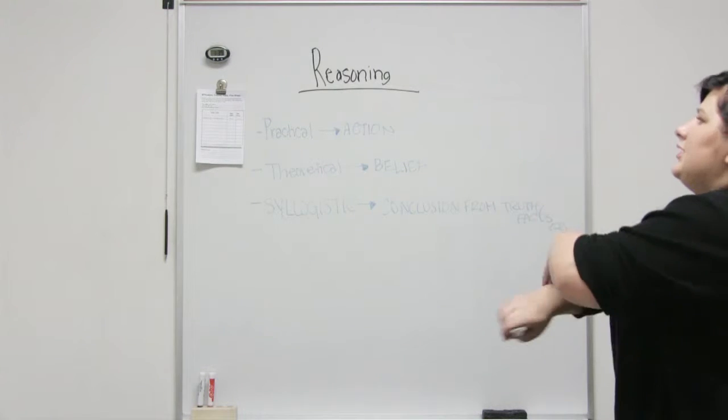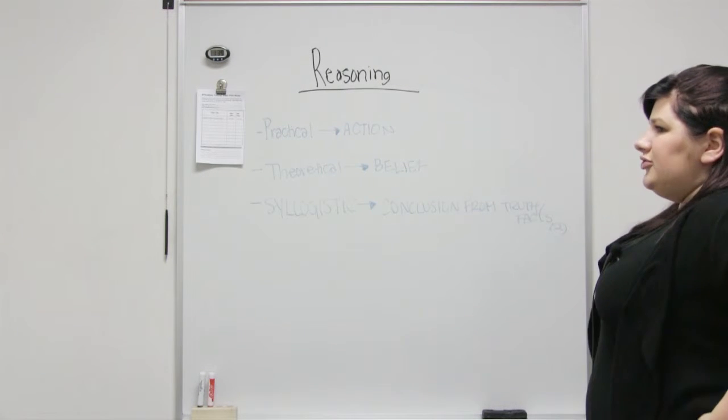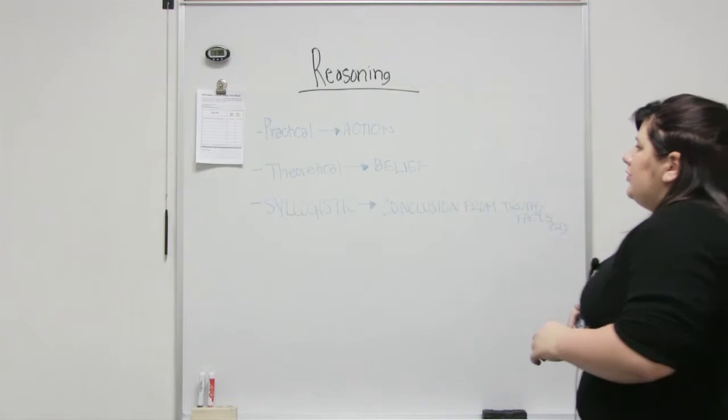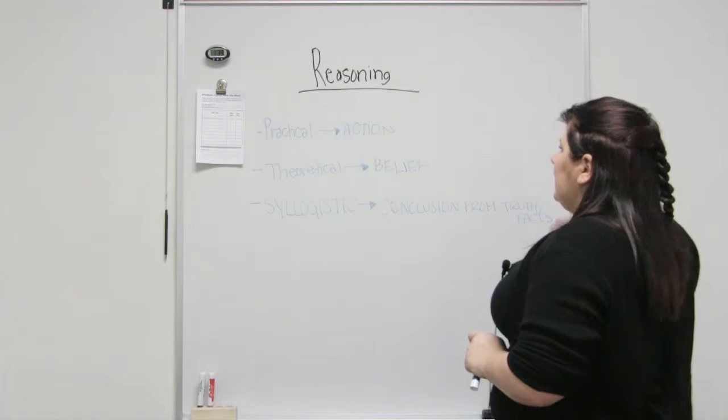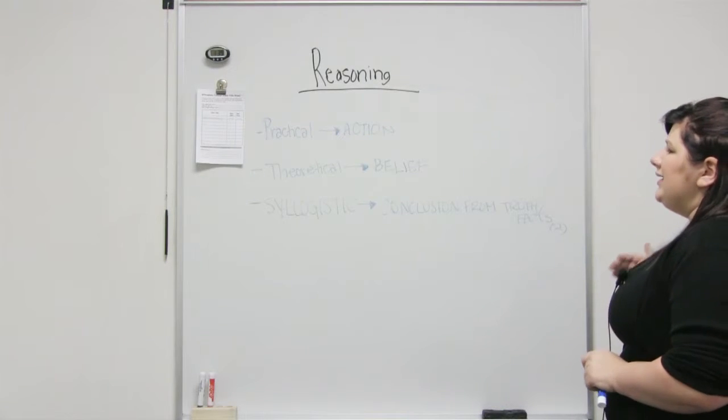Okay, so when we try to apply reasoning towards situations, what we're doing is we're trying to come to a conclusion for ourselves in order to get to something. So the types of reasoning depend on what you're trying to get to.